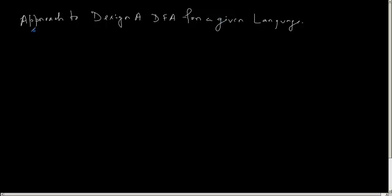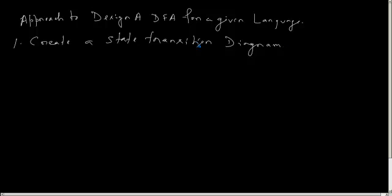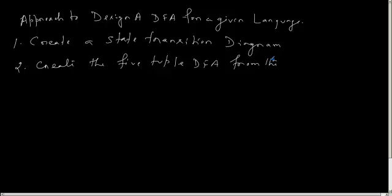Two steps, it is a two-step method. First you create a state transition diagram for the problem, and then create the five-tuple DFA from the diagram.